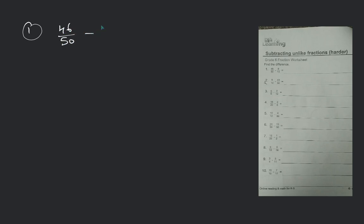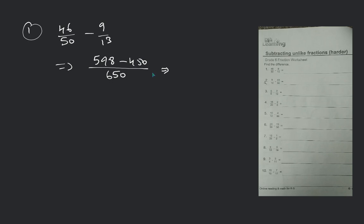We do the same — we just multiply both the denominators. It will be giving 13 into 50 = 650, minus 46 into 13 = 598. This is a bit calculative — we just have to keep our patience. 598 minus 450 is giving 148 divided by 650. This will be your correct answer.